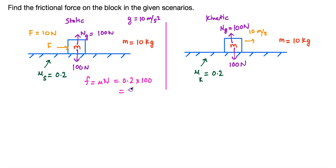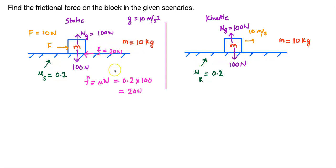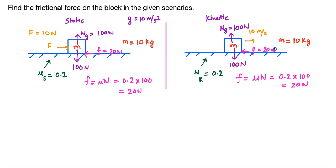So the frictional force is going to be 20 newtons, and friction always opposes the direction of tendency of relative motion. Without friction the block would move freely, but friction opposes that tendency. So in the first case — the static case — friction acts opposite the applied 10-newton force with a magnitude of 20 newtons. For the moving block, since the coefficient of friction is the same, it is still μ × N = 0.2 × 100 = 20 newtons, acting opposite to the direction of motion.